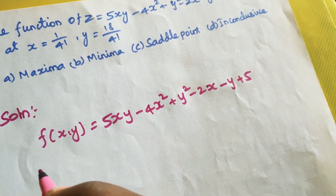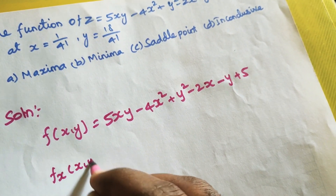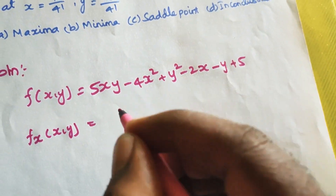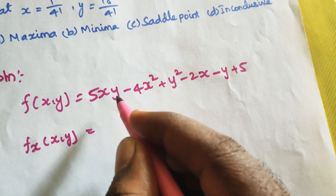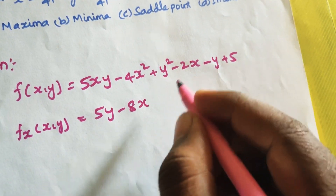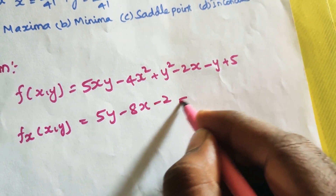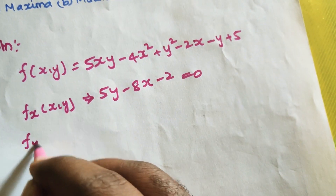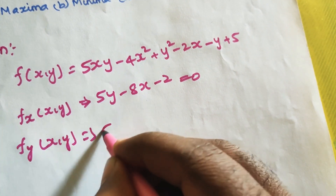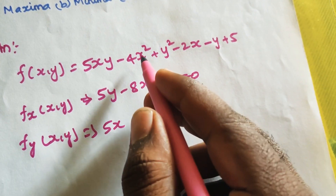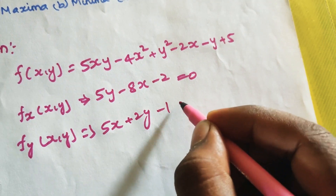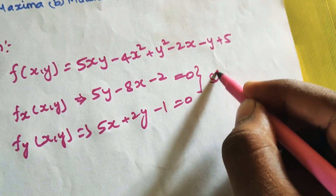First we find the stationary point. fx(x,y): differentiate with respect to x, that is 5y - 8x - 2 = 0. Then fy(x,y): differentiate with respect to y, that is 5x + 2y - 1 = 0. Stationary value.